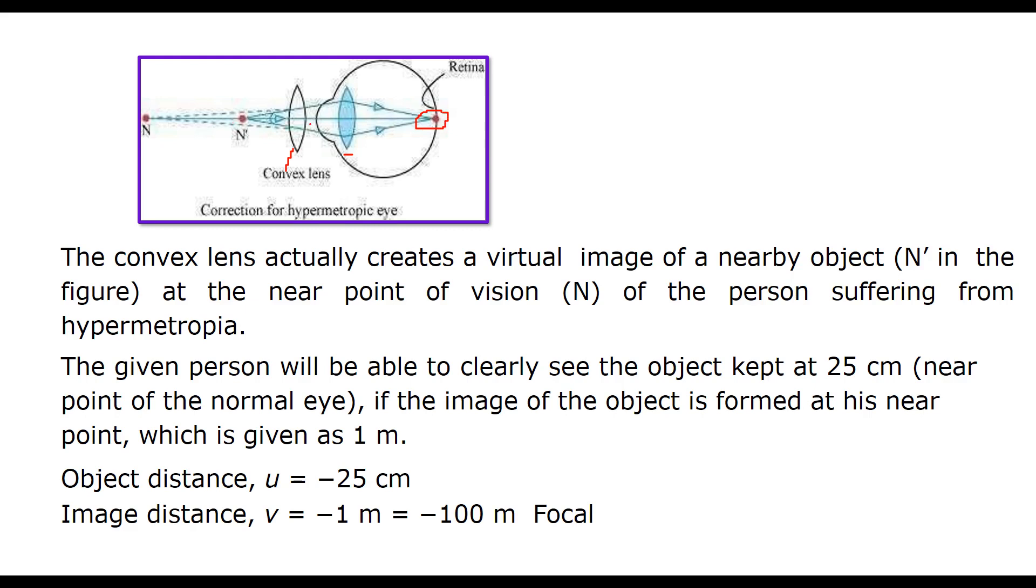The convex lens actually creates a virtual image of nearby object at the near point of vision N of the person suffering from hypermetropia. The given person will be able to clearly see the object kept at 25 cm, the near point of the normal eye. If the image of the object is formed at his near point, which is given as 1 meter, we will use these values.